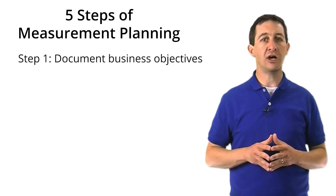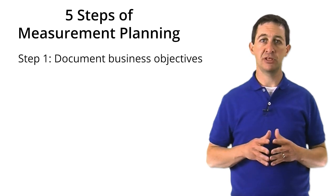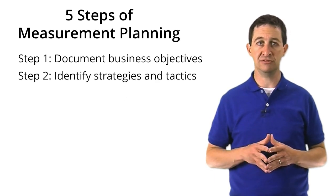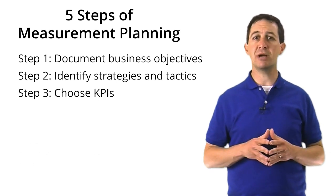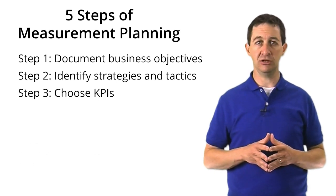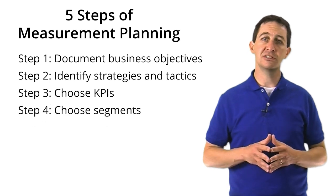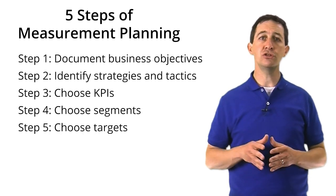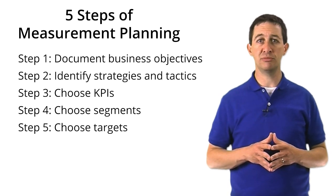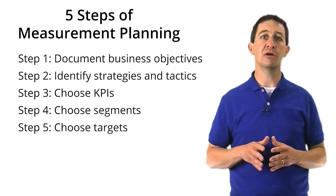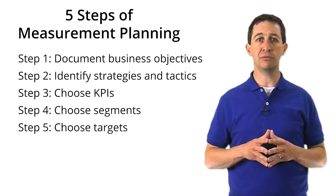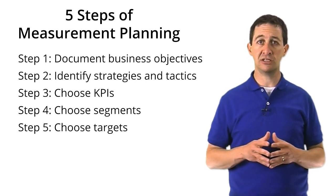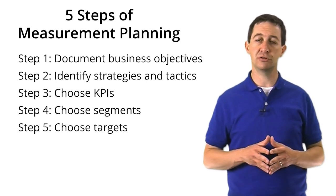Here's an overview of the five steps. First, document your business objectives. Second, identify the strategies and tactics to support the objectives. Third, choose the metrics that will be the key performance indicators. Fourth, decide how you'll need to segment your data. Finally, choose what your targets will be for each of your key performance indicators. Remember, this process requires you to meet with the people who make the decisions in your business — this could be managers, executives, or you, if you're a small business owner.